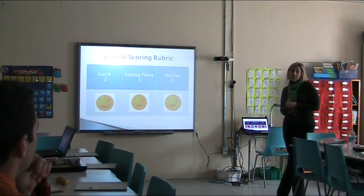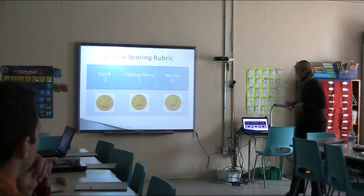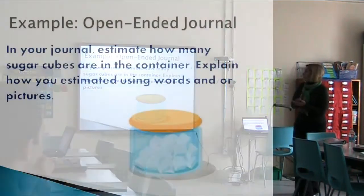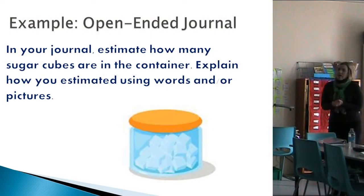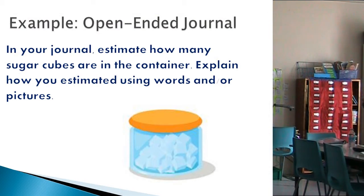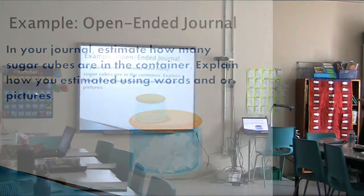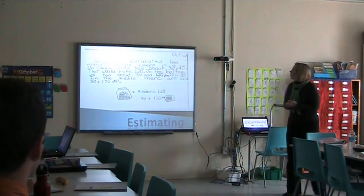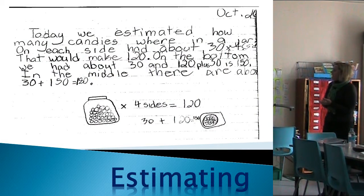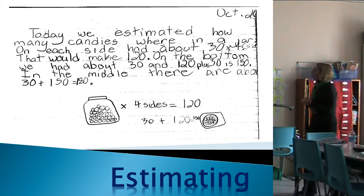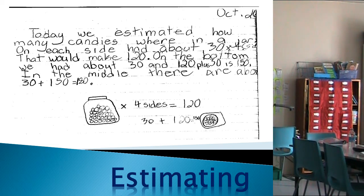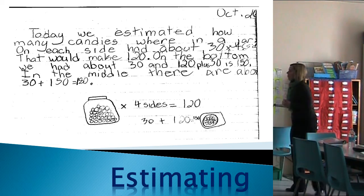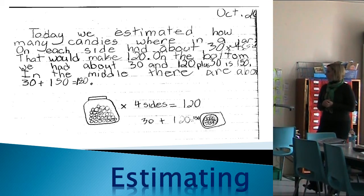Here is an example that I did with a class about two weeks ago. The prompt was: In your journal, estimate how many sugar cubes are in the container — explain how you estimated it using words and/or pictures. One student wrote: each side had about 30 times 4 sides, that would make 120; on the bottom we had about 30; 120 plus 30 is 150; in the middle there are about 30; 30 plus 150 is 180.